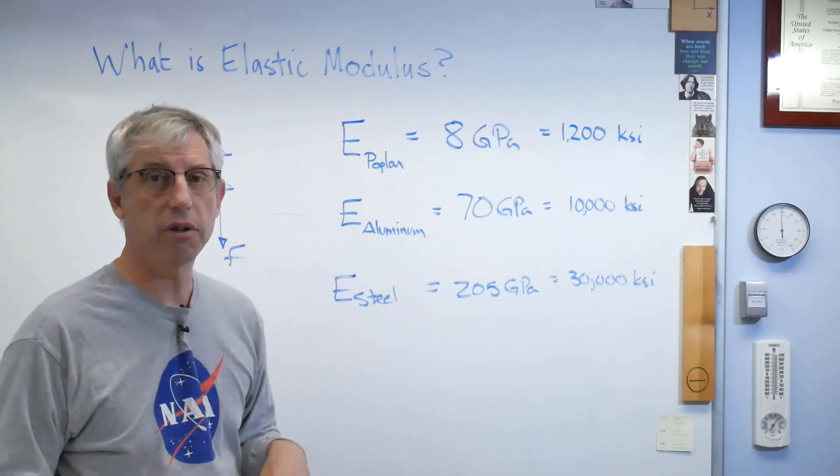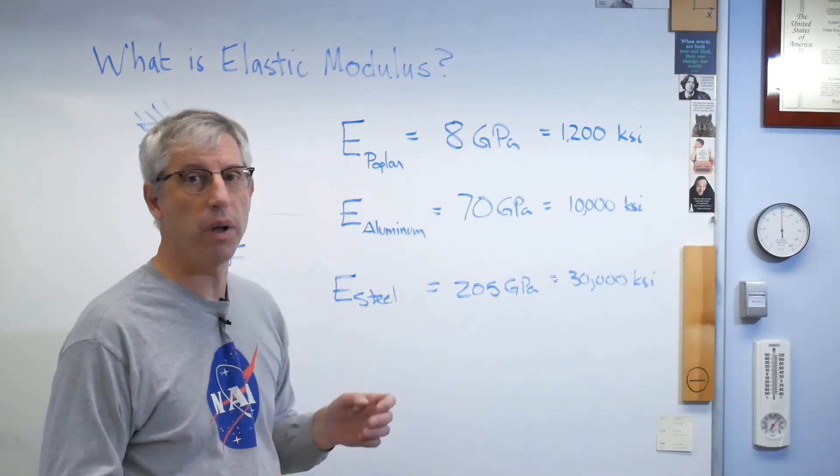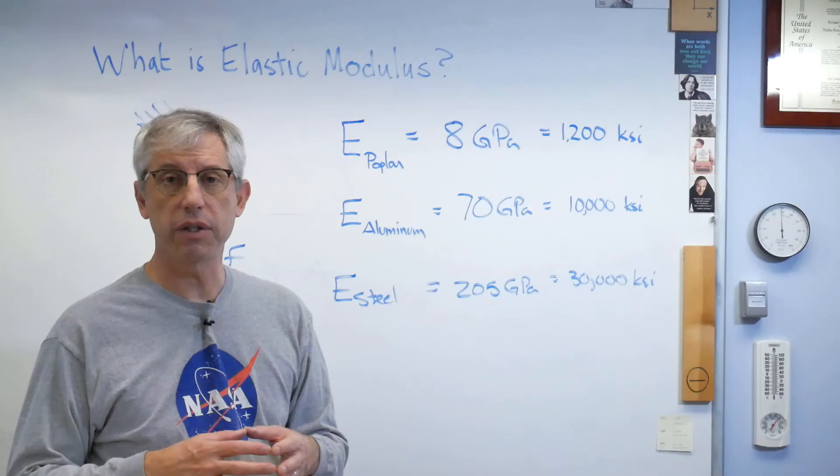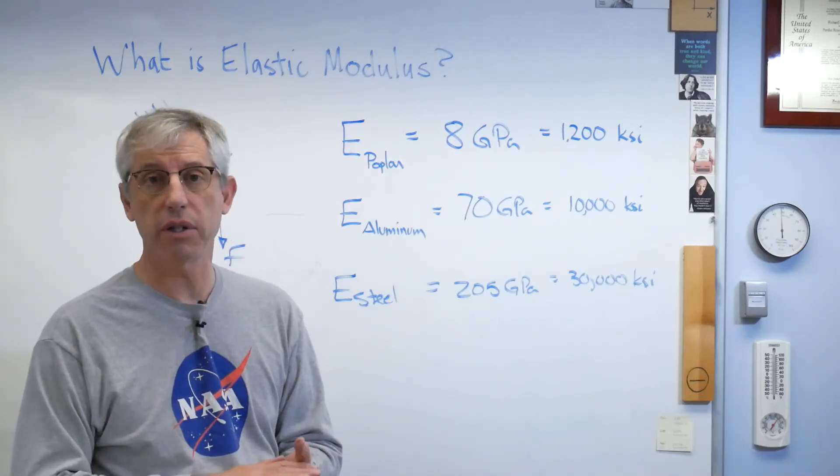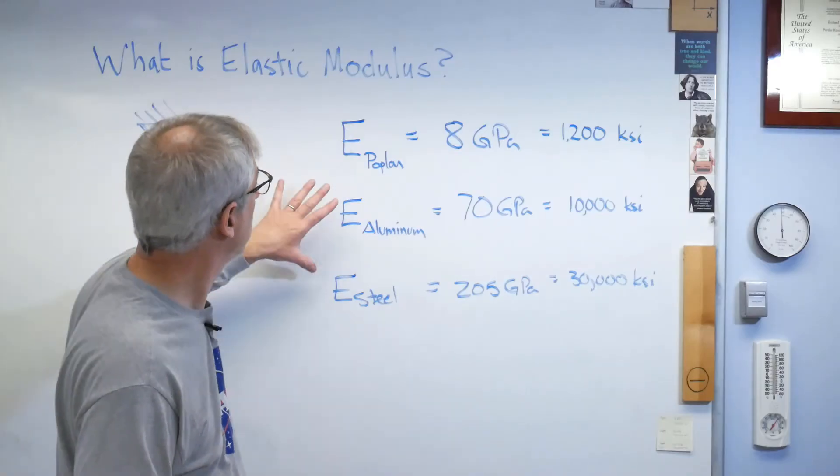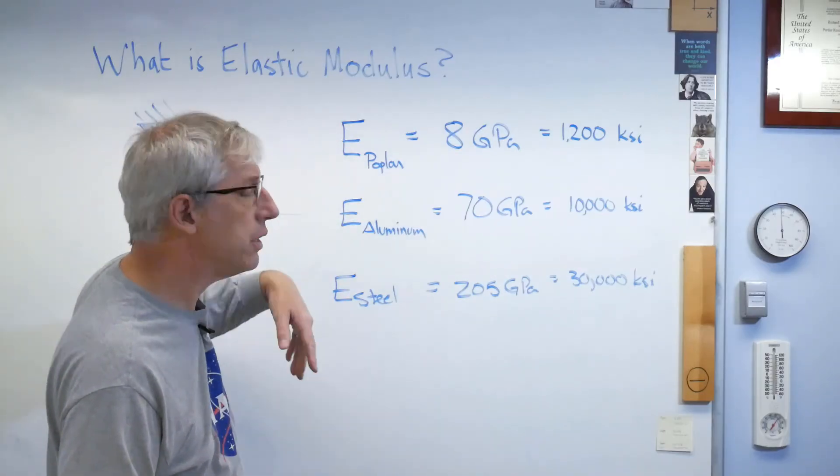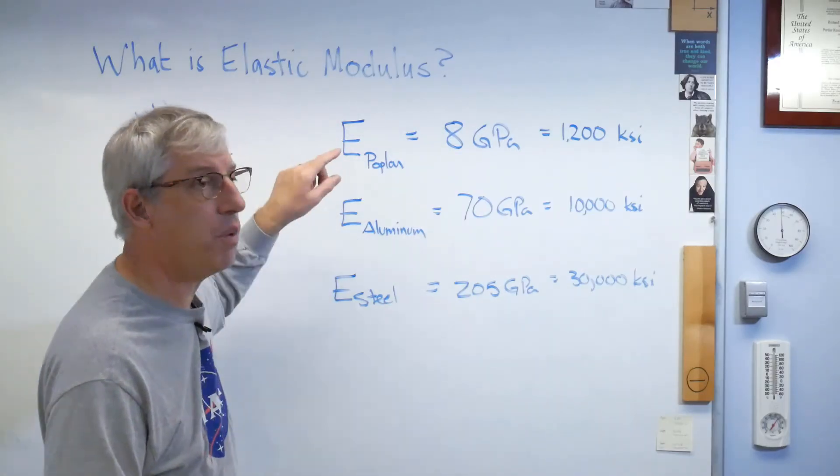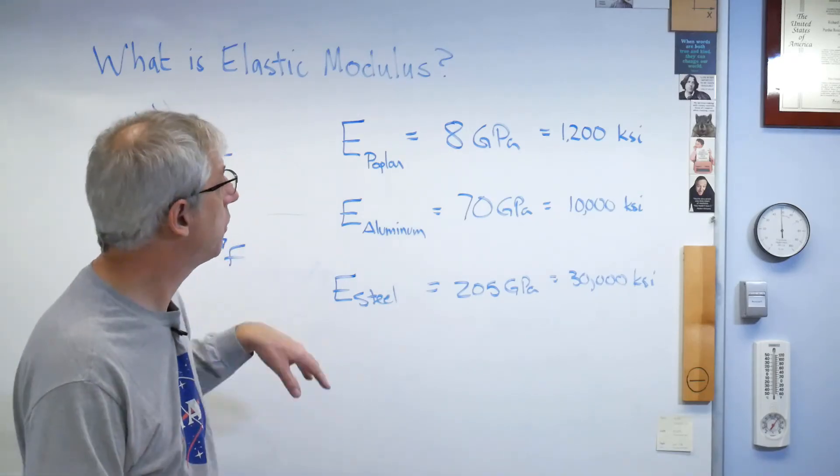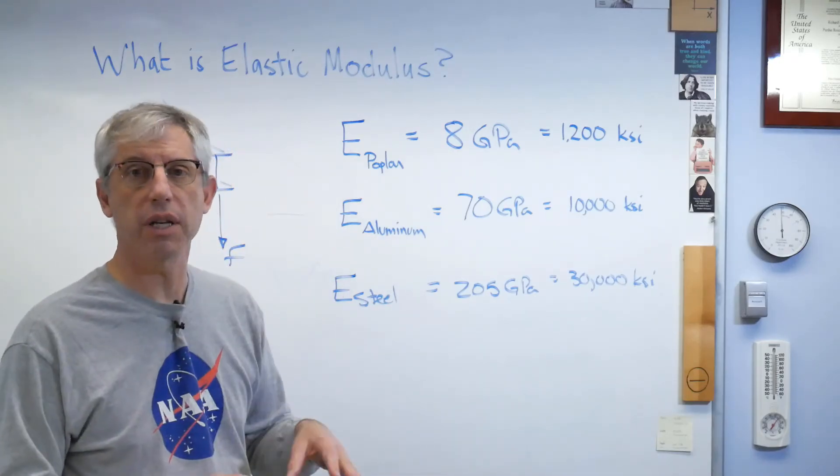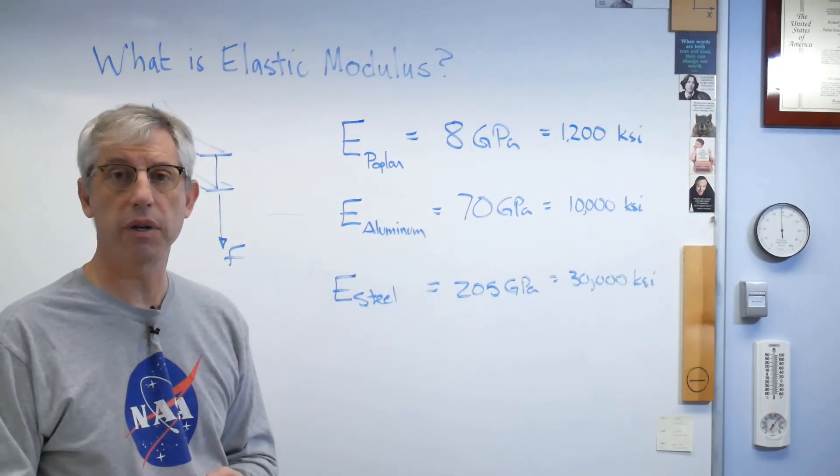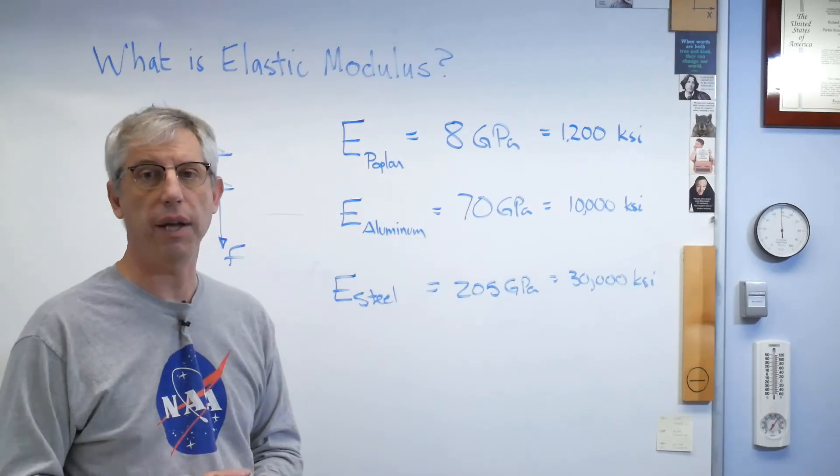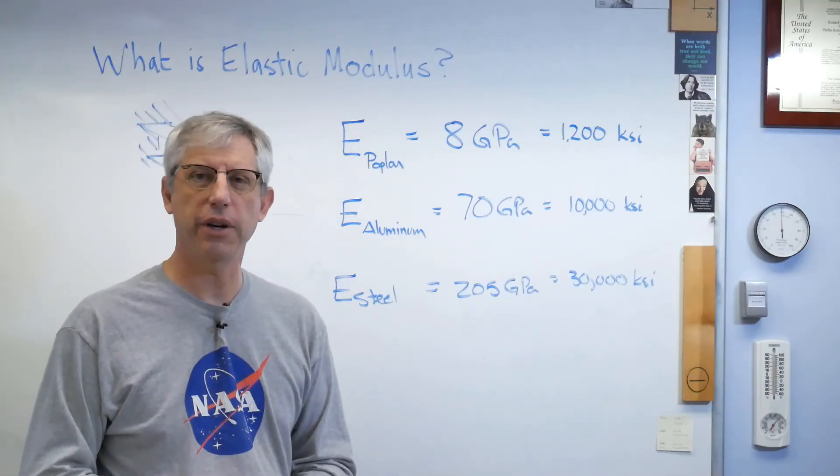Now, as you get farther into materials, you're going to find out this isn't always one number. If you have a material that's different depending on which direction you go, like wood or composite or something like this, it has directional stiffnesses. There's more than one number describing elastic modulus. But for anything that's uniform, homogeneous, isotropic, and all that, it's just one number. So, when you're taking your strength of materials class, this is the one you'll see. So, I hope this helps. We'll talk to you next time.